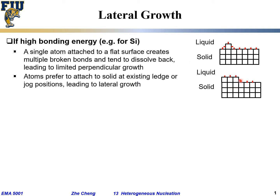These types of positions — where I'm pointing — people call them ledge position or jog position. Initially at this position, I have one dangling bond pointing up and one dangling bond pointing right. When we add one extra atom here, we are satisfying some dangling bonds. At the same time, I keep one dangling bond pointing up and one pointing right. So in this process, I'm adding an atom but not really creating too many extra dangling bonds. Because of this, lateral growth — adding an atom at a specific location — is much more probable than adding an atom on a flat surface.